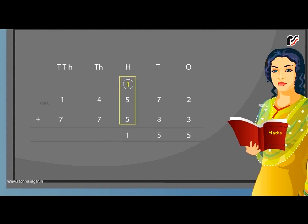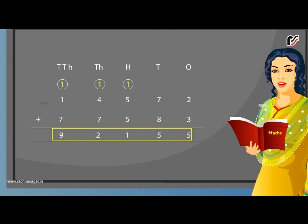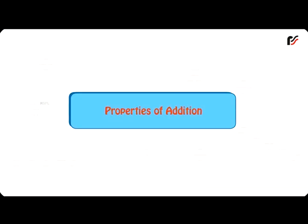Write 1 under the hundreds column and carry 1 to the thousands column. Now add the thousands: 1 carried over plus 4 plus 7 is equal to 12 thousands. Write 2 under the thousands column and carry 1 to the tens thousands column. Finally, add the tens thousands: 1 carried over plus 1 plus 7 is equal to 9 tens thousands. Write 9 under the tens thousands column. Thus the sum of 14,572 and 77,583 is 92,155.